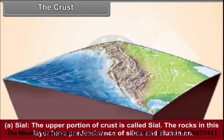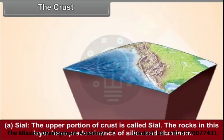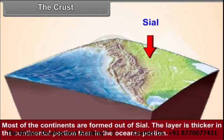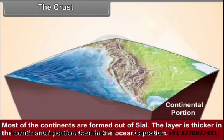The upper portion of the crust is called Sial. The rocks in this layer have predominance of silica and aluminum. As these elements are lighter in weight, they are found in the upper layer of the crust. Most of the continents are formed out of Sial. The layer is thicker in the continental portion than in the oceanic portion.